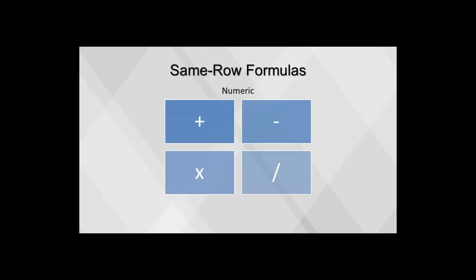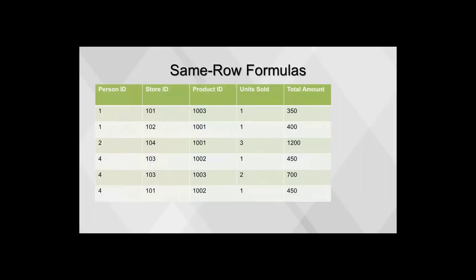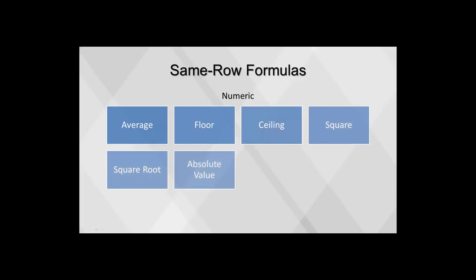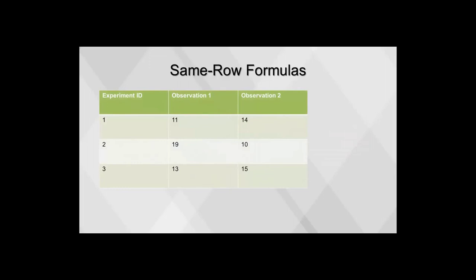Formulas can be used for adding, subtracting, multiplying, or dividing two numeric fields. In this example table, we apply a formula to create the price column, which was calculated by dividing units sold by total amount. Formulas can also be used when applying a mathematical function to a numeric field. Examples of mathematical functions include average, floor (finding the smallest value), ceiling (finding the largest value), square, square root, absolute value, trigonometric functions, and logarithmic functions. In this table, we create an observation average column using the average formula, which averages values from the observation 1 and observation 2 columns.